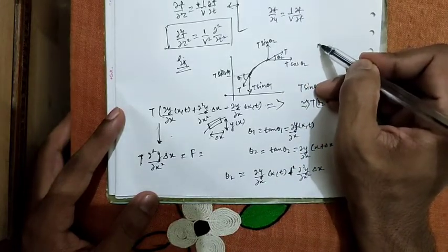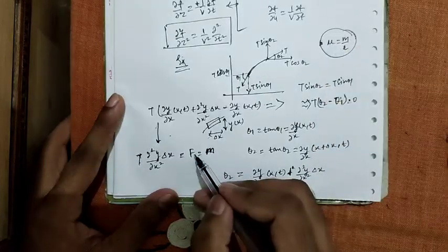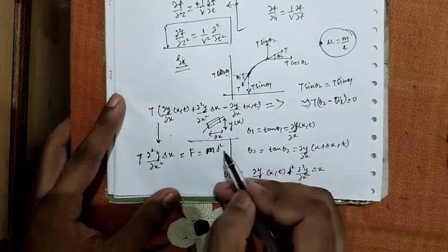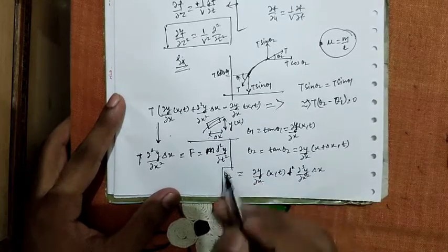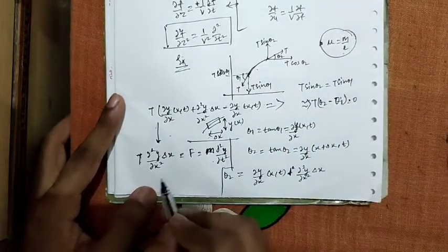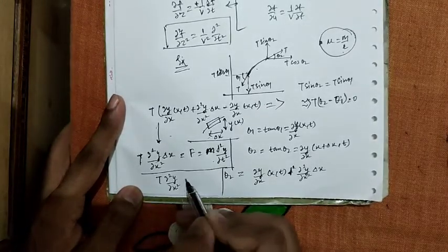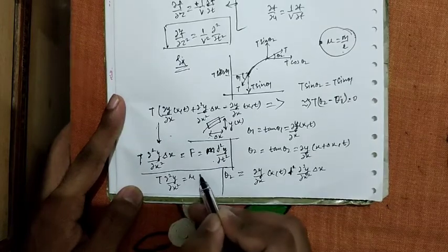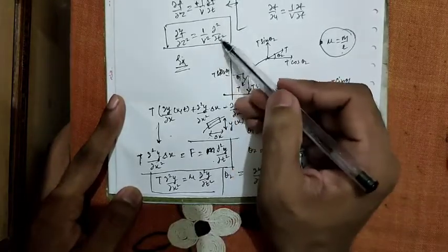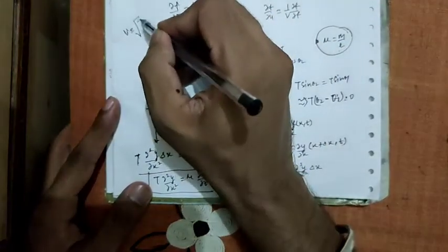This gives us T·(∂²y/∂x²) = μ·(∂²y/∂t²). Comparing this with the classical wave equation, we can conclude that the wave velocity is v = √(T/μ). Thank you.